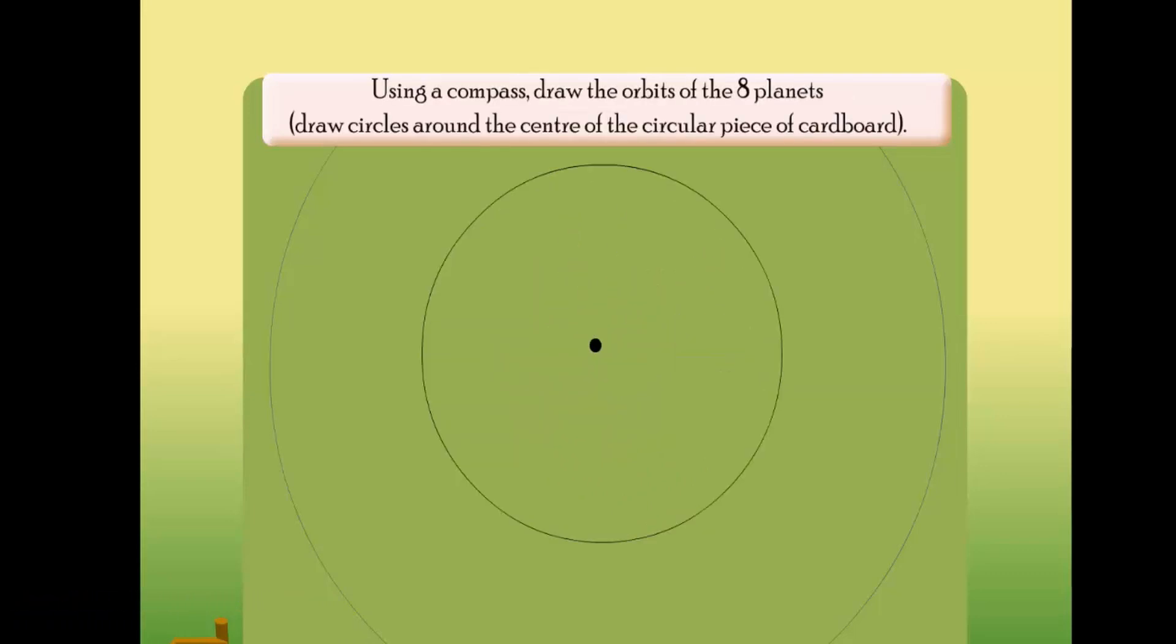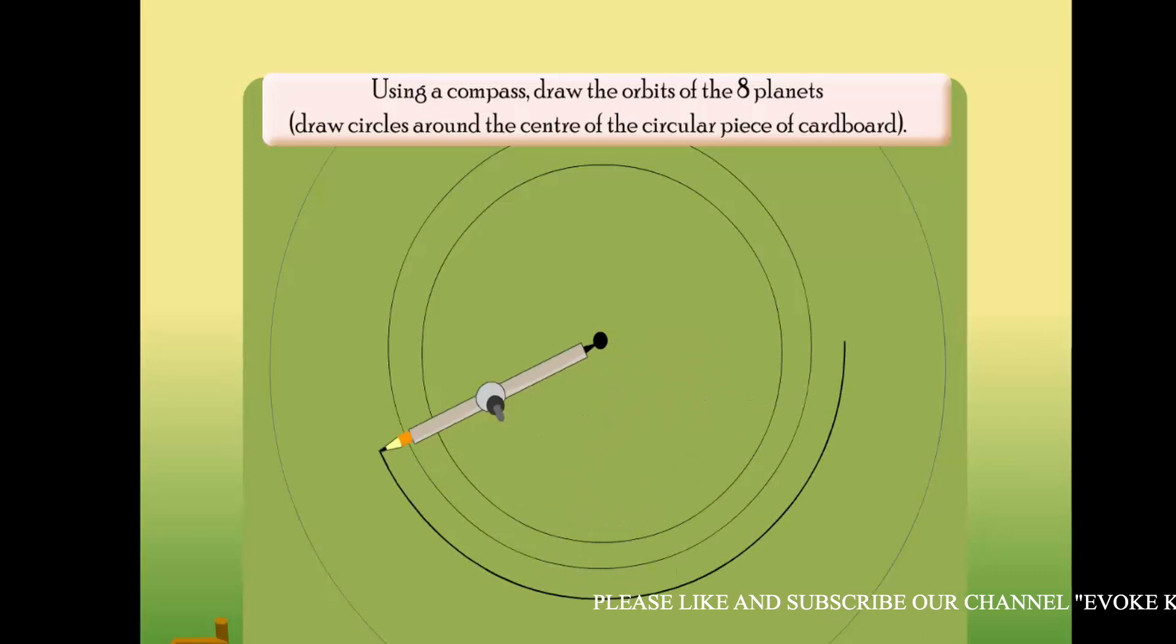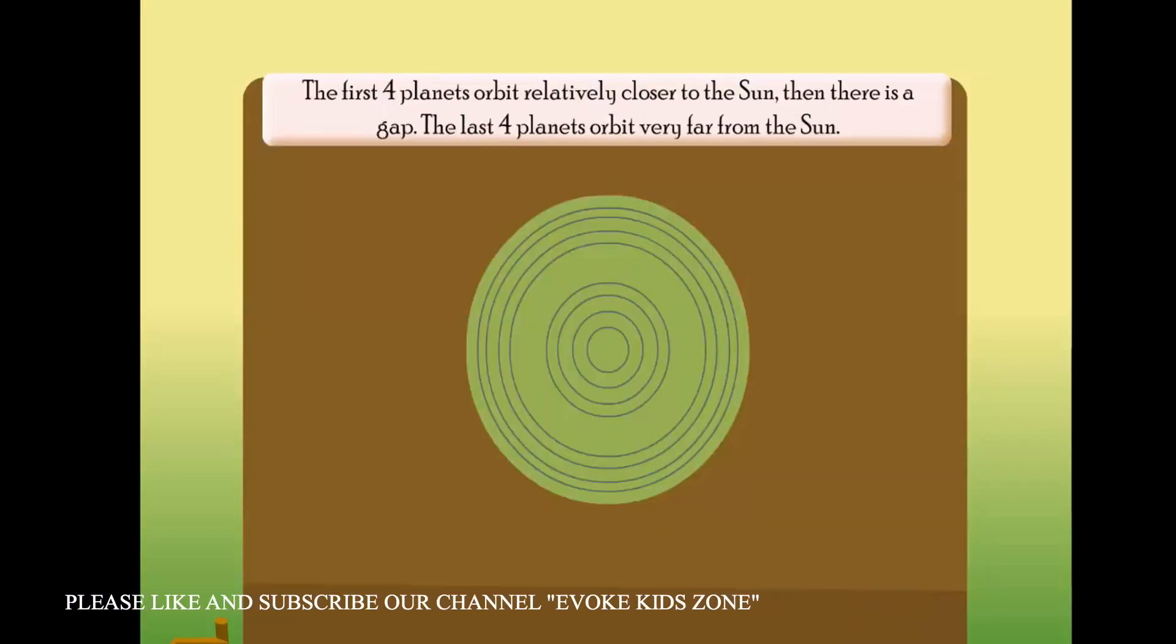Using a compass, draw the orbits of the eight planets. You can do this by drawing circles around the center of the circular piece of cardboard. The first four planets orbit relatively closer to the Sun, then there is a gap.